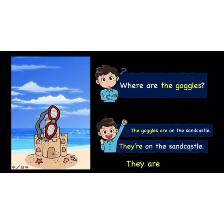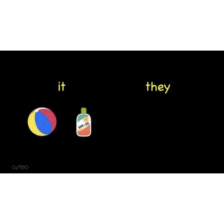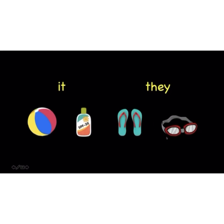So, if the question begins with 'where is', the answer must begin with 'it's'. If the question begins with 'where are', the answer must begin with 'they're'. This is because 'where is' indicates there is only one object, and 'where are' means there must be more than one. We use 'it' to refer to one thing — it's a ball, it's a lotion. We use 'they' when referring to more than one thing — they're slippers, they're goggles.